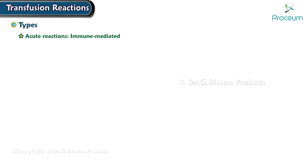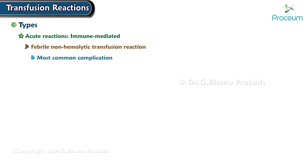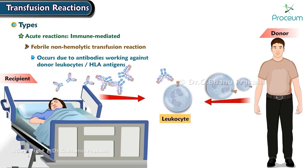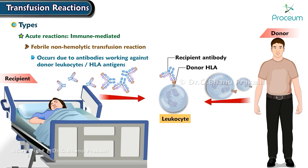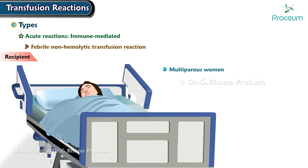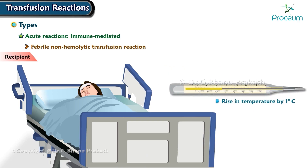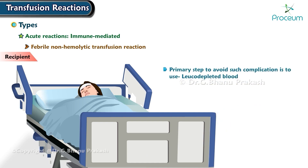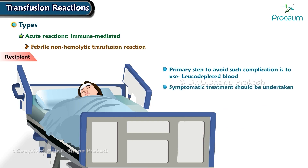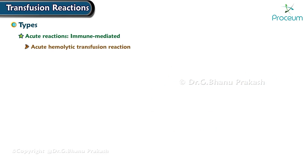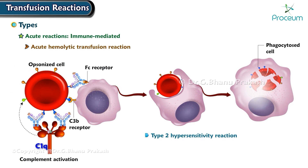Acute immune-mediated reactions: febrile non-hemolytic transfusion reaction is the most common complication. It occurs due to antibodies working against donor leukocytes and HLA antigens. Multiparous women and those who receive multiple transfusions, like patients with thalassemia major, are at highest risk. Recipients present with rise in temperature by one degree, chills, rigors, and flushing. The primary step to avoid this complication is to use leukodepleted blood, and symptomatic treatment should be undertaken.